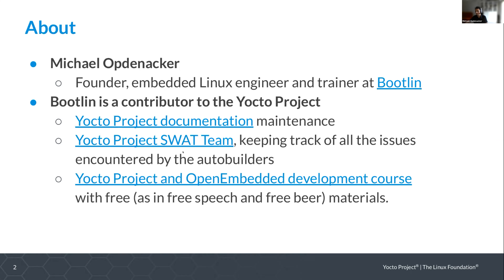Bootlin also helps with the Yocto project SWAT team. We check the output from the auto builders, the issues that are reported by them, and we make sure they're properly triaged, referenced, and tracked. Eventually a fix is found, and we notify people when one of their commits breaks the branch. I'm really impressed by the insane amount of testing work that the Yocto project does — it's a truly impressive project in that respect.